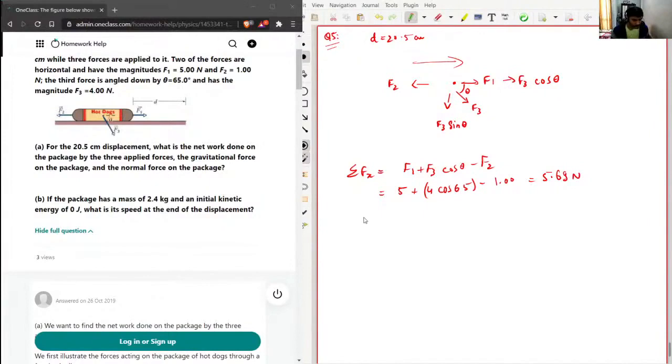This will be 5.69 newtons. And we need to find the work done, so work done is going to be summation of Fx into the displacement. So this is 5.69 newtons and my displacement is 20.5 centimeters, so we'll just convert it, so this will become 0.205 meter times 0.205.